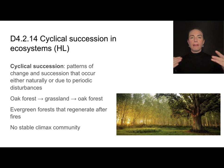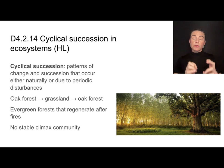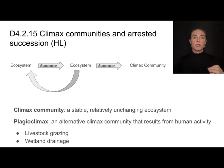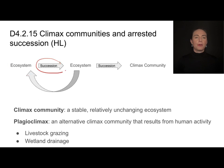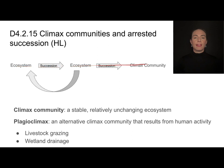Evergreen forests, dominated by conifers like pine trees, often regenerate after fires — an example of a periodic disturbance that transforms an ecosystem but then cycles back around. Because of this cyclical nature, there is no stable climax community in these cases. Climax communities are those very stable, relatively unchanging ecosystems. Ecosystems like the oak forest undergoing cyclical succession never settle permanently. By contrast, climax communities progress in a more linear way — something like a tropical rainforest that is relatively stable and unchanging.